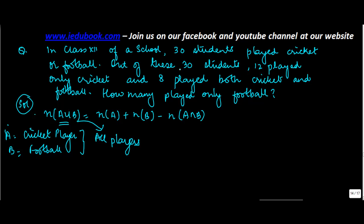And we know that there are 30 students played cricket or football. So all players - there are 30 players. n(A) which stands for the students who play cricket. We know that 12 players played only cricket and 8 played both cricket and football. So in all there are 12 plus 8 students who play cricket, which is n(A). Plus n(B) we have to find out.